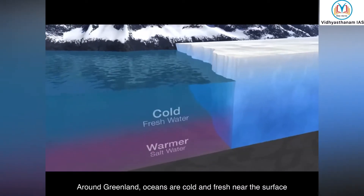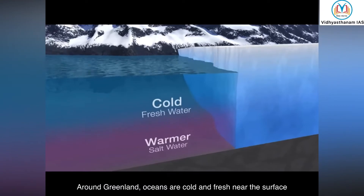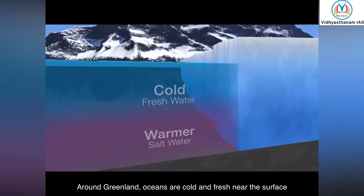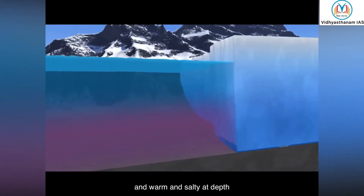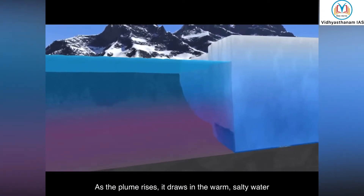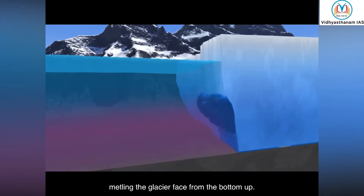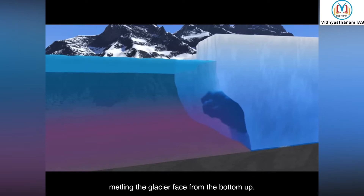Around Greenland, oceans are cold and fresh near the surface and warm and salty at depth. As the plume rises, it draws in the warm salty water, melting the glacier face from the bottom up.